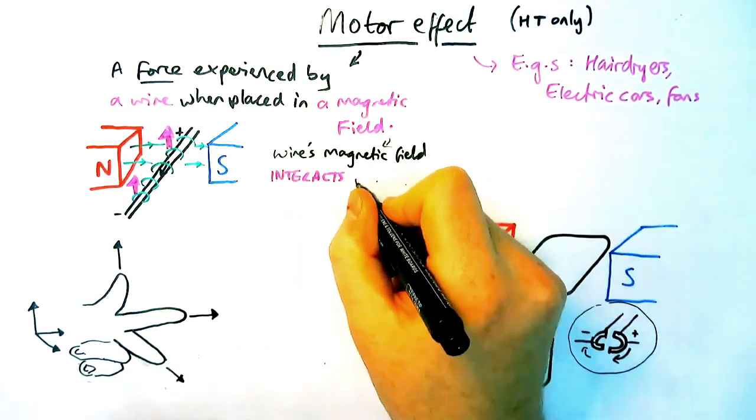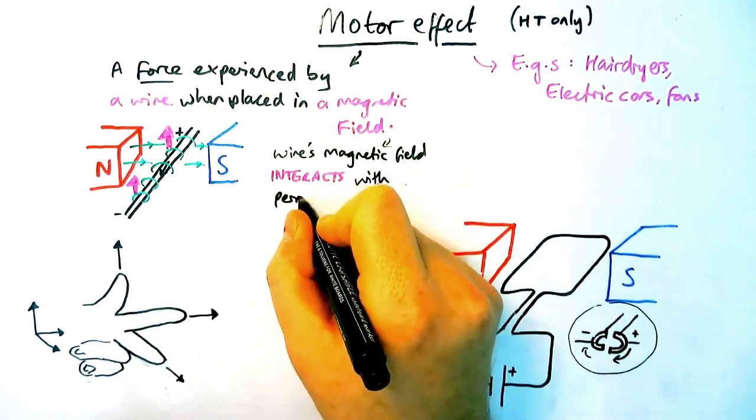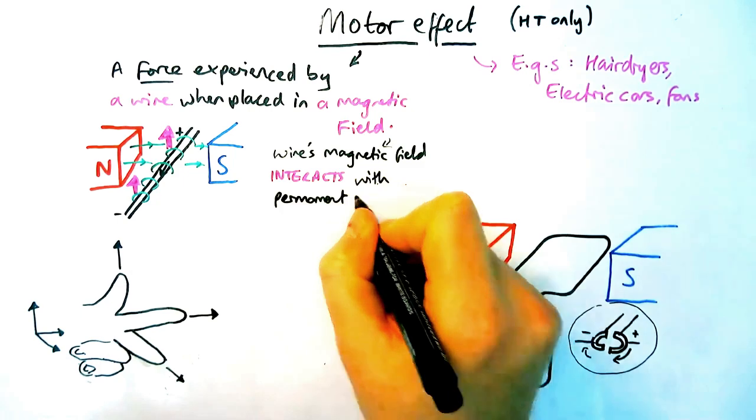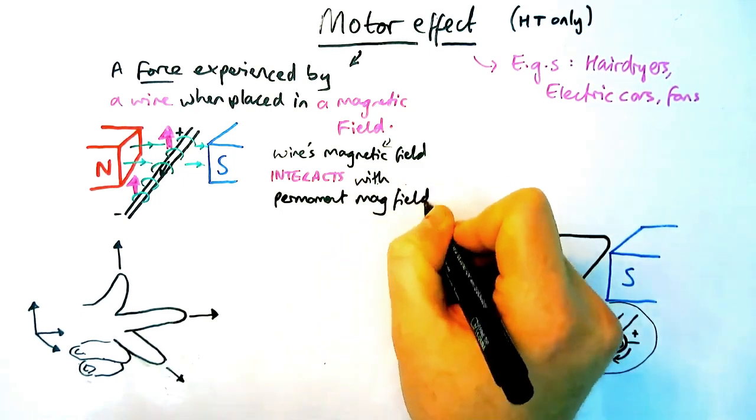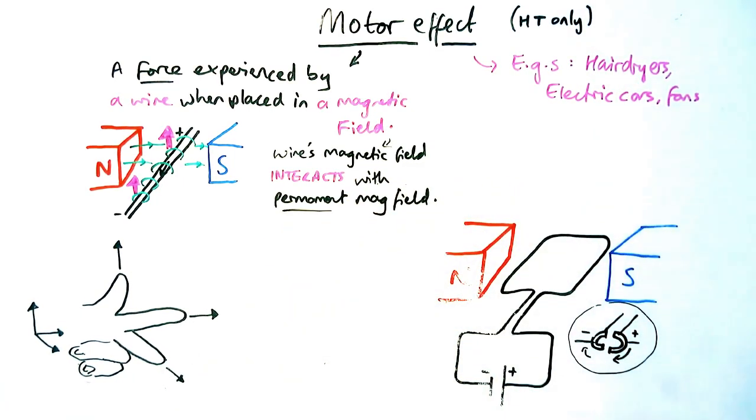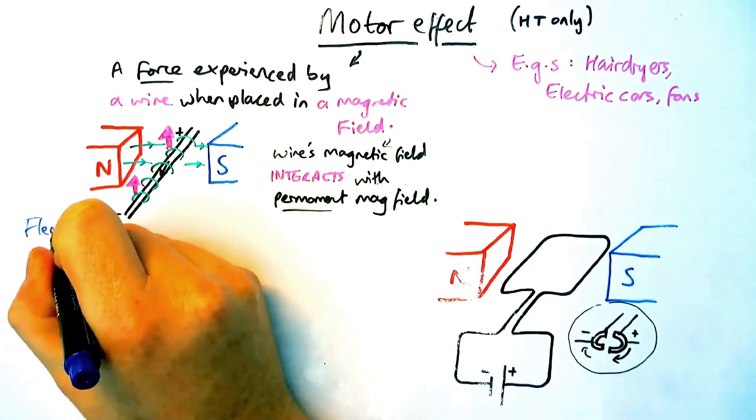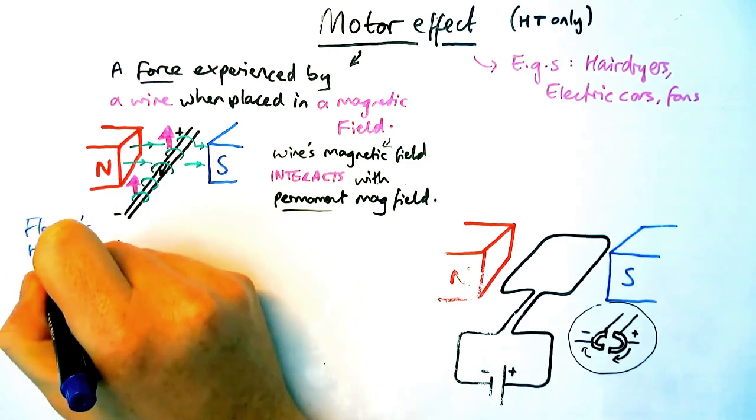Now how can we go about predicting which way the wire is going to move? To be able to do that we need to know something called Fleming's left hand rule which is the diagram down here. Apologies for the state of the diagram.